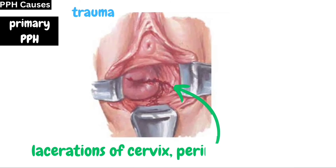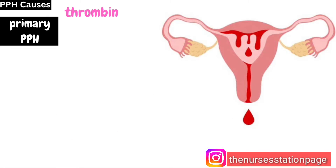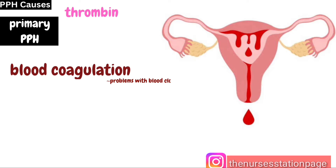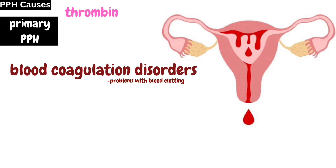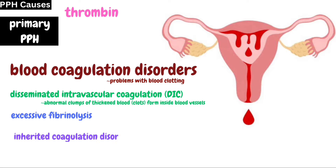The second T is trauma, such as lacerations of the cervix, perineum, and uterus. The third T is tissue, which refers to bits of placental tissue or fetal membranes retained inside the uterus. The fourth T is thrombin, which refers to coagulopathy or blood coagulation disorders, which may be caused by disseminated intravascular coagulation (DIC), excessive fibrinolysis, inherited coagulation disorders, or idiopathic thrombocytopenic purpura. Among the four T's, atonic uterus is the most common cause of primary PPH.